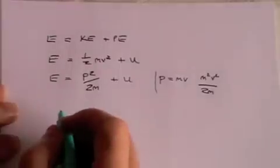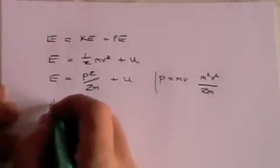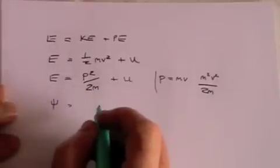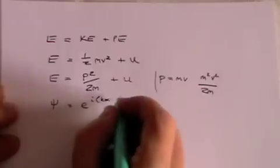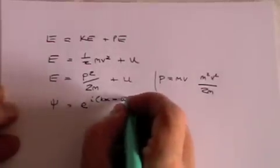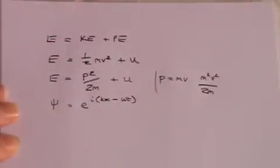Okay, we're also going to use a wave, and our wave is going to take the form of psi is e to the i kx minus omega t. And you'll need to see another one of my lectures to establish why we use that particular form for a wave.